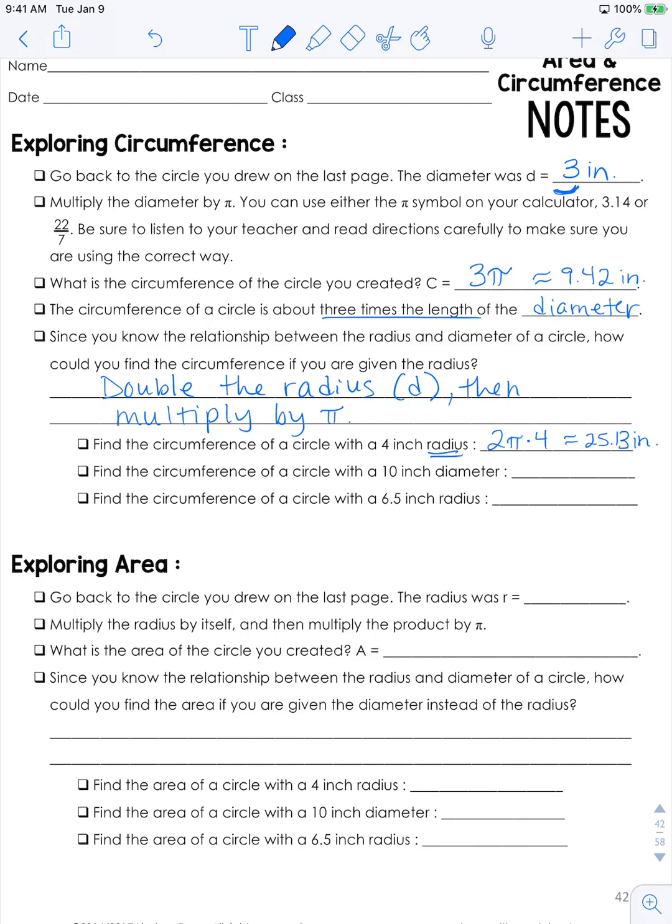You can push pause here and work these out yourself and then hit play when you are ready to check your answers. The circumference of a circle with a 10 inch diameter, so we only need to do π times the diameter, is going to be approximately 31.42 inches.